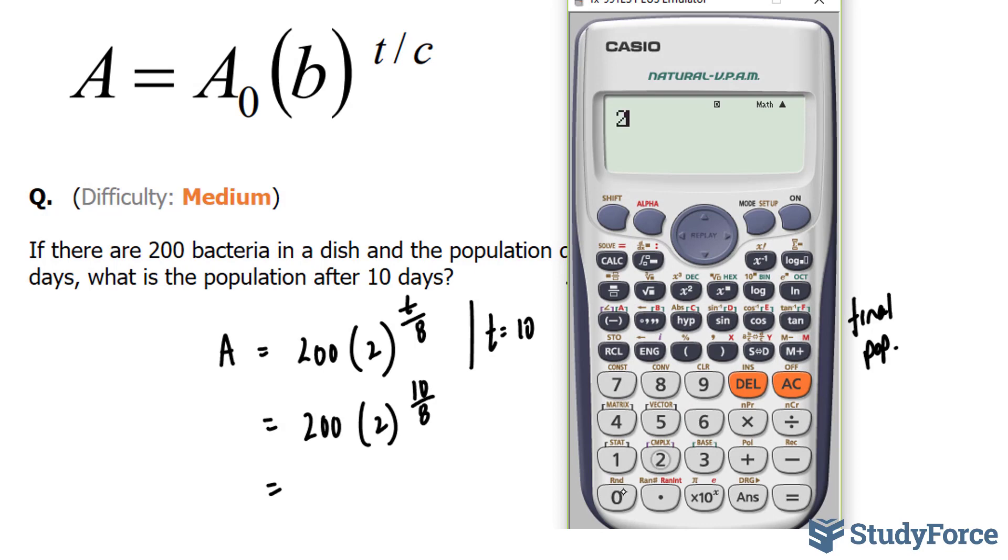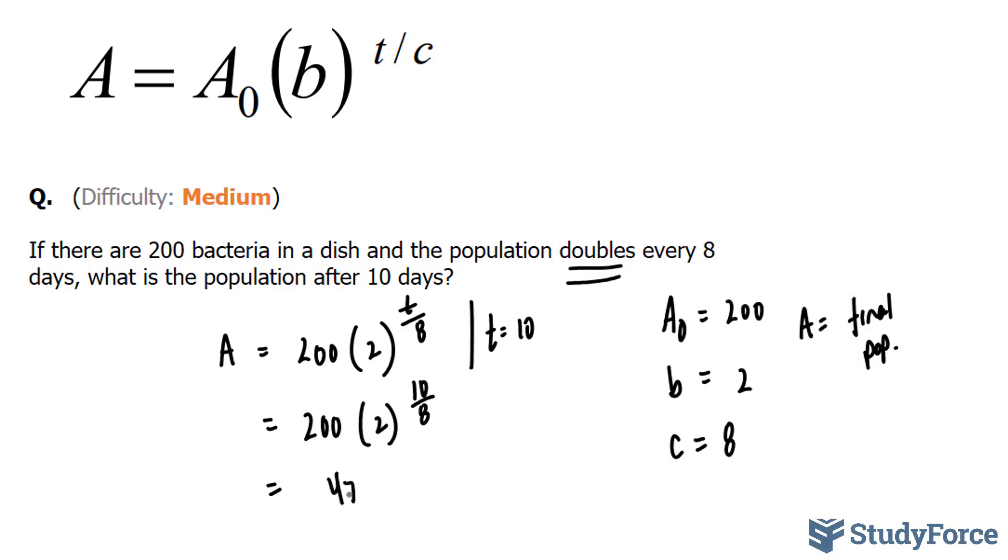Using our calculator, 200 times 2 to the power of 10 divided by 8 gives us 475 total bacteria.